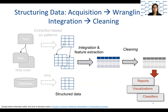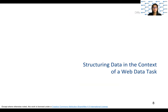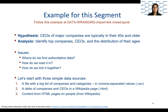Let's see an example of structured data in the context of web data tasks. Suppose we are interested in knowing the typical age of CEOs of major companies. How can we do this using Jupyter Notebook on your laptop? Suppose we have a file of companies and categories and need to find authoritative data about CEOs. It turns out that there is a list of companies and their CEOs on Wikipedia, which we assume is authoritative and up-to-date. But it doesn't have information about ages, so we may need to extract that from the HTML pages of CEOs, again from Wikipedia. The first two sources are already well-structured and the third is more complicated.